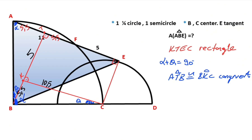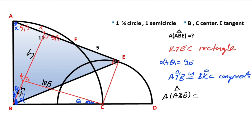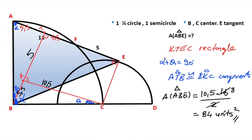Therefore the area of triangle ABE equals height times base over 2. The height is 10.5 and the base is 16, so 10.5 times 16 over 2 equals 84. Therefore the area of triangle ABE must equal 84 square units. Okay, this was the first method.